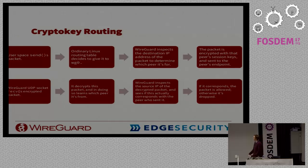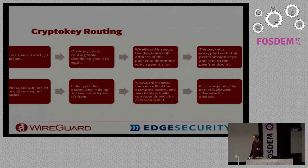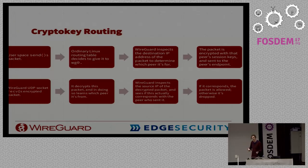At the API level: user space sends a packet via a send syscall. The Linux networking layer decides the packet should go to the wg0 interface, so it enters the WireGuard driver. WireGuard looks at the destination IP, finds the corresponding public key, looks up the current session for that key, encrypts the packet, and sends it to the endpoint. In reverse, when the UDP socket receives an encrypted packet, it decrypts it, identifies the public key session, inspects the source IP, and checks whether that public key is allowed to send as that source IP — if yes, it goes onto the interface; if not, it's dropped.